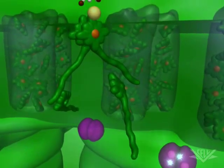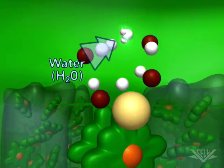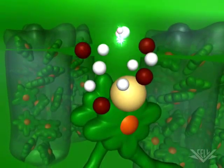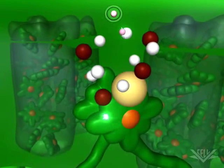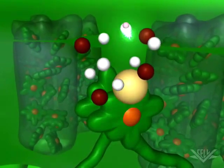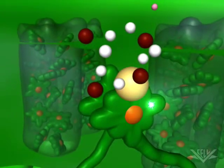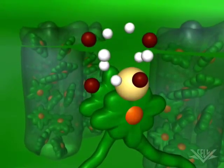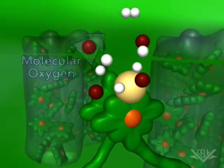The two electrons lost from photosystem II are replaced by the splitting of water molecules. Water splitting also releases hydrogen ions into the lumen. This contributes to a hydrogen ion gradient, similar to the one created by mitochondrial electron transport. After two water molecules have been split, one molecule of molecular oxygen is created.